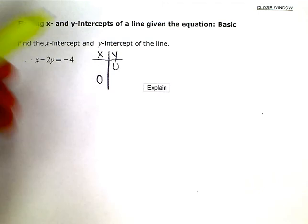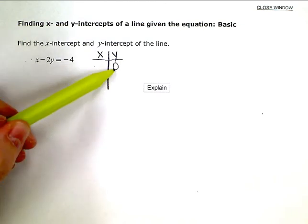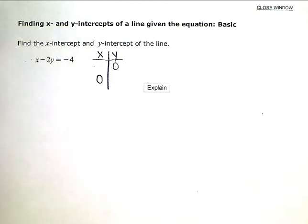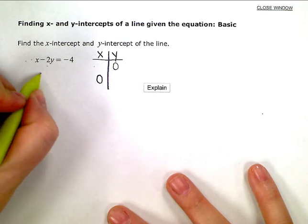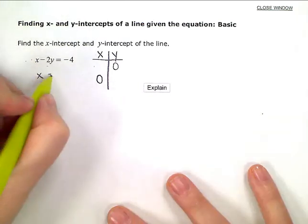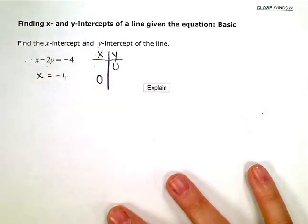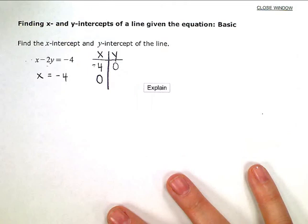So if I'm looking for the x-intercept, or a value right here, I'm going to zero out my y-variable. So I'm basically going to ignore this term, this negative 2y. And if I do that, then I'm left with x equals negative 4. Simple enough. So my x-intercept is negative 4.